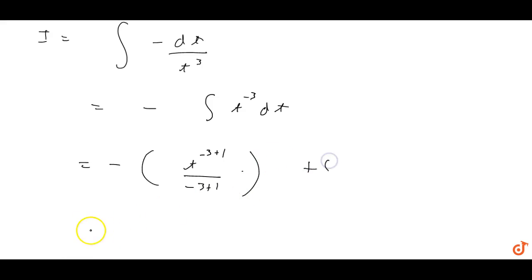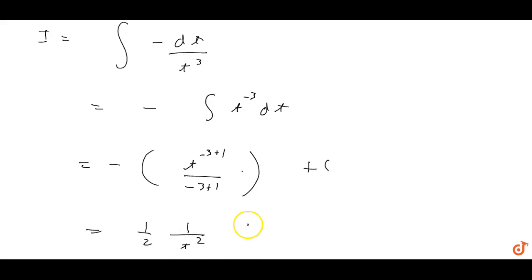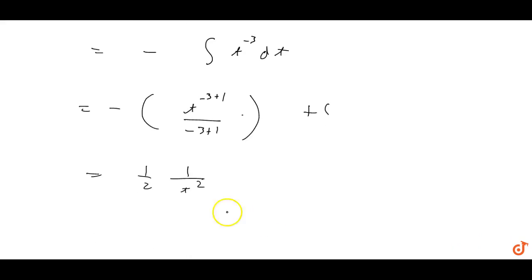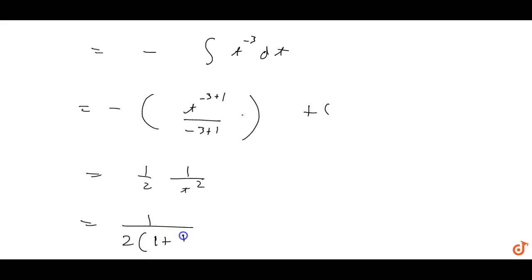Plus c. The minus and minus become positive, giving us 1/(2t^2) + c. Now substituting back t = 1 + 1/x^2 + 1/x^5, we get 1/[2(1 + 1/x^2 + 1/x^5)^2] + c.